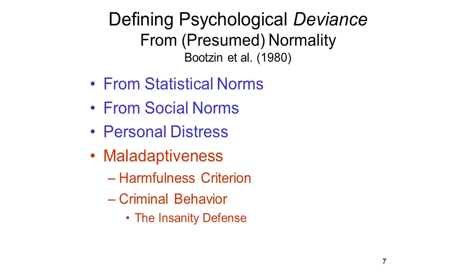The fourth criterion we can use to identify deviations from normal mental functioning is a criterion of maladaptiveness. Mental illness often leads people to engage in behaviors that are harmful to themselves and others. For example, people with depression may be at elevated risk for suicide. People with antisocial personality disorder, by definition, engage in antisocial behaviors. Normal mental function is almost by definition adaptive because the purpose of the mind is to aid the organism's adaptation to its environment. So a harmfulness criterion is helpful in diagnosing mental illness.